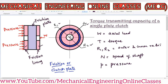The pressure is indicated on the left side because on the left side of the clutch plate we have the flywheel. The flywheel surface and the clutch plate surface will be in contact, so pressure will be exerted there. And mu is the coefficient of friction between the contact surfaces.